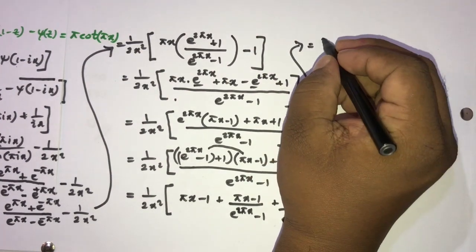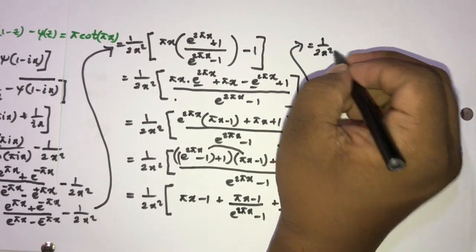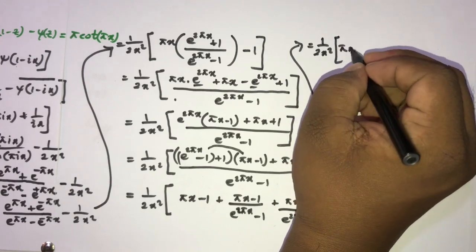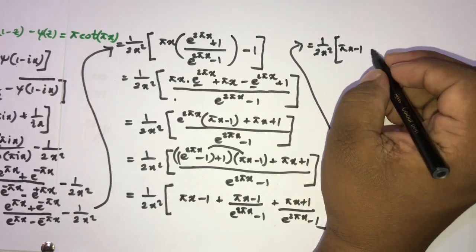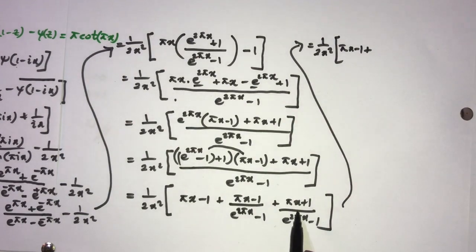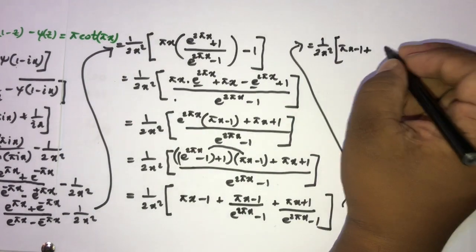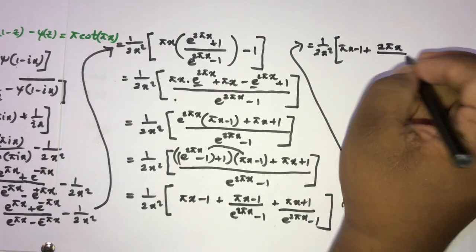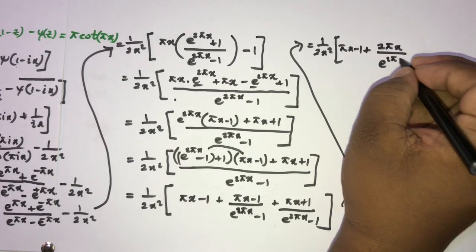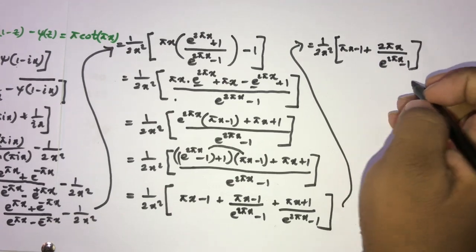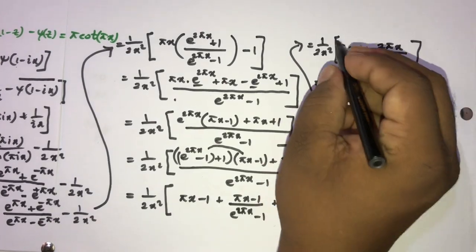Simplifying further: the −1 and +1 cancel, leaving 2πx + 2πx/(e^(2πx) − 1), times 1/(2x²). The 2 and x cancel, giving π/x · 1/(e^(2πx) − 1) − 1/(2x²) ... and combining all pieces yields the final result.